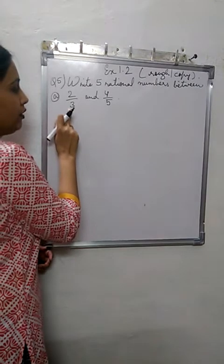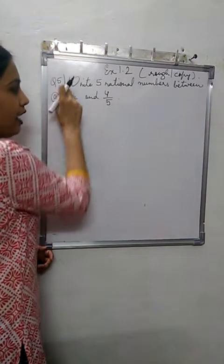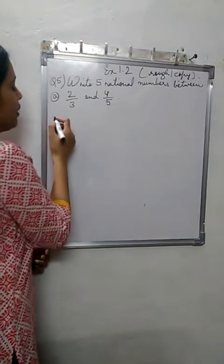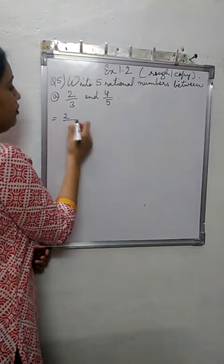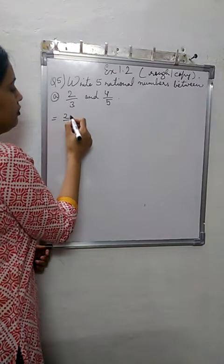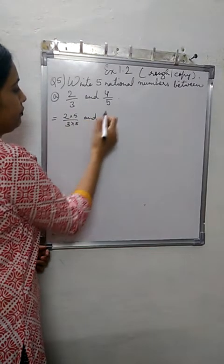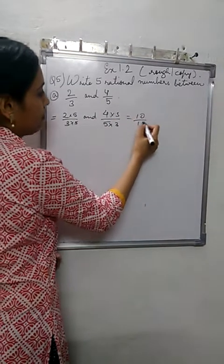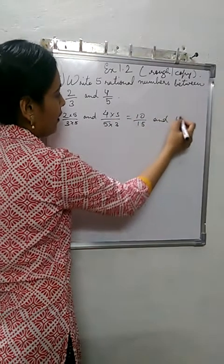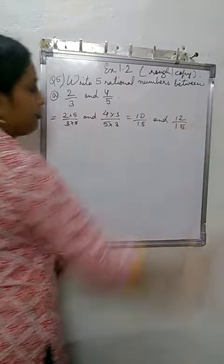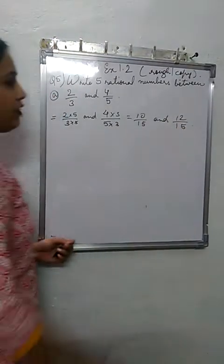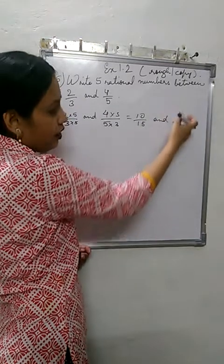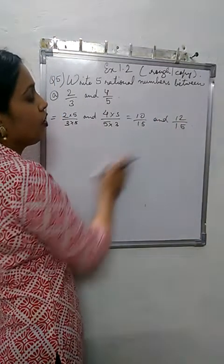So, if I multiply 3 that side and 5 this side up and down, it will be 3 fives of 15. So the denominators become same. Now, 2 files are 10 by 15 and 12 by 15. But you see, there is only one rational number in between: 10 by 15, 11 by 15, then the question. So it is not possible.